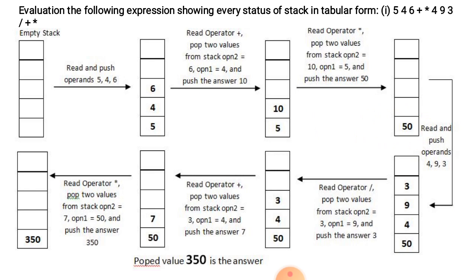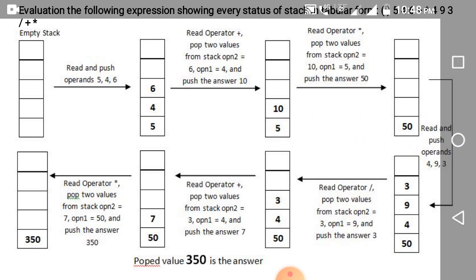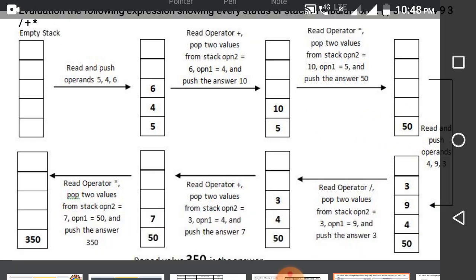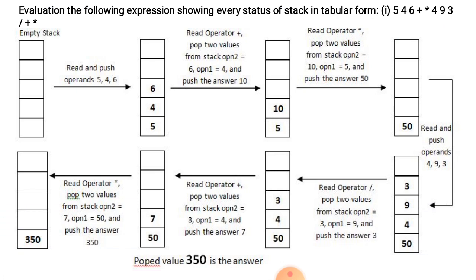Now we read and push operands 4, 9, and 3 because the multiplication operation was just performed. So 50 remains as it is, and 4, 9, and 3 are added to the stack.